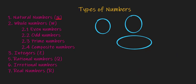Our next type of number is composite number. When a number has more than one factor other than 1 and the number itself, it is known as a composite number. For example, 4, 6, 8, 10.